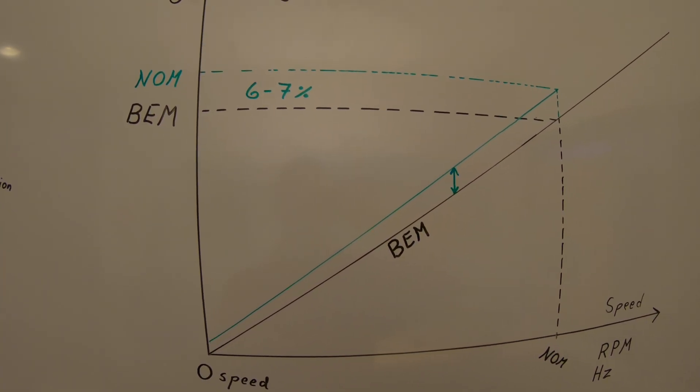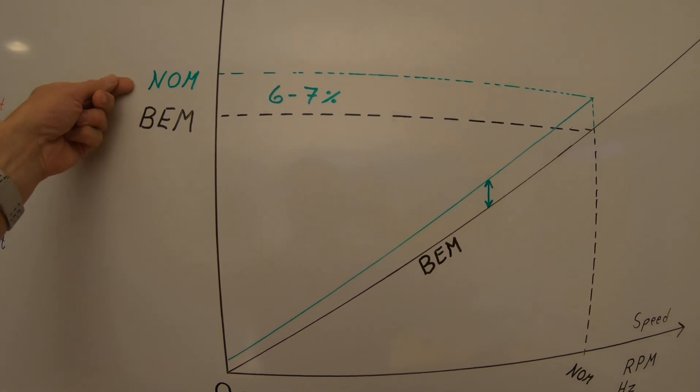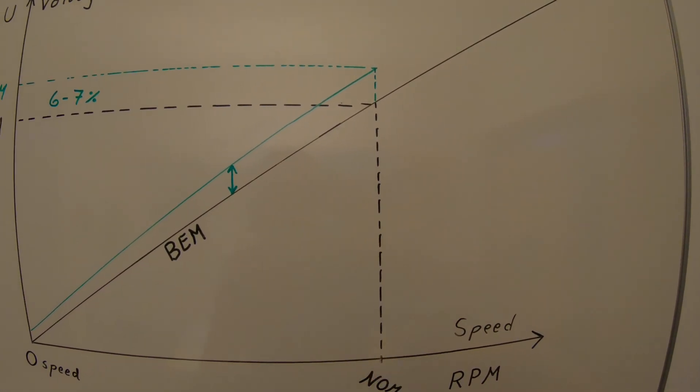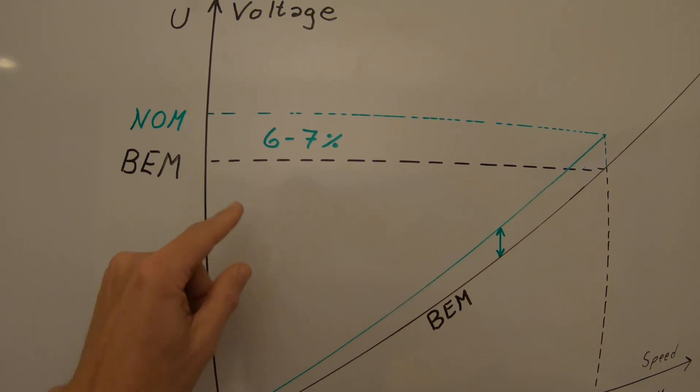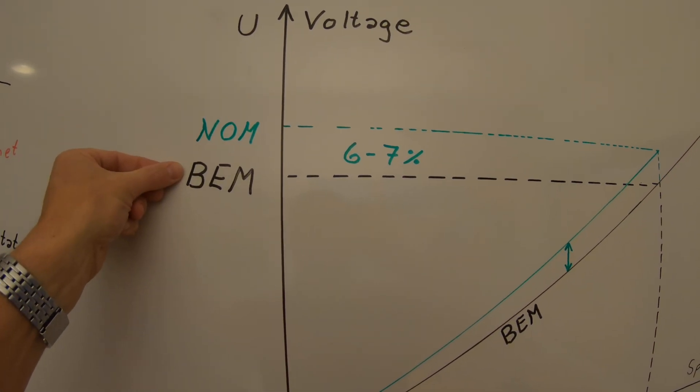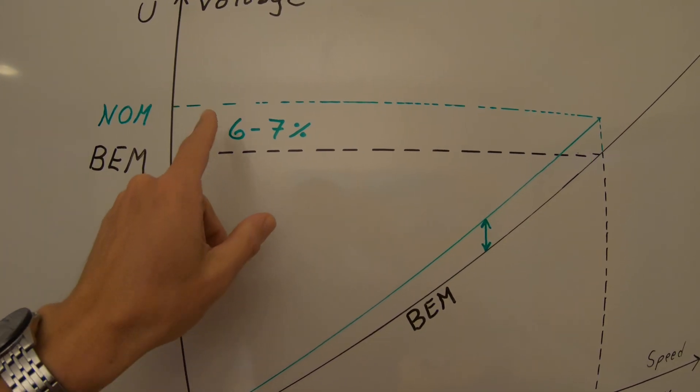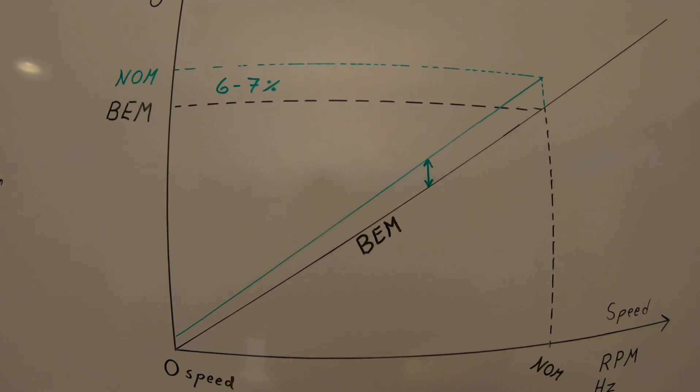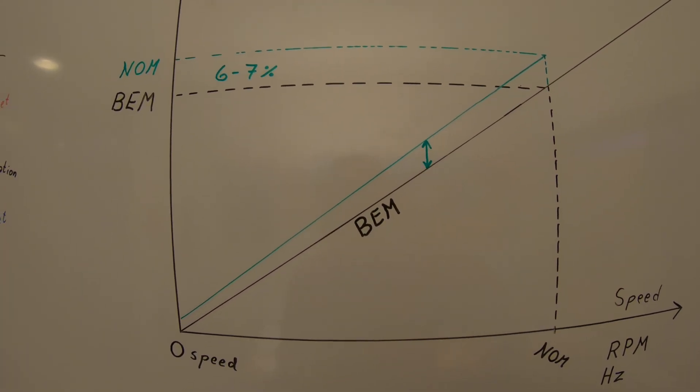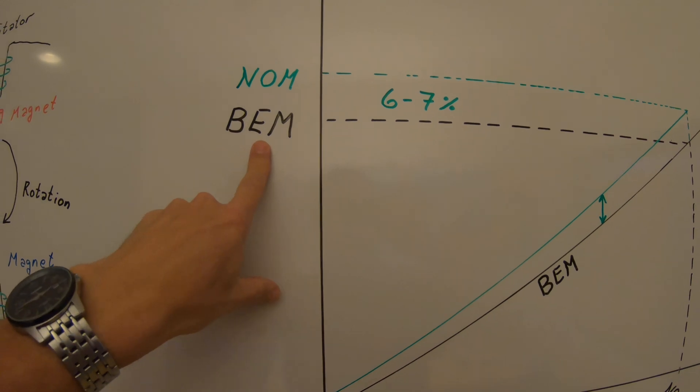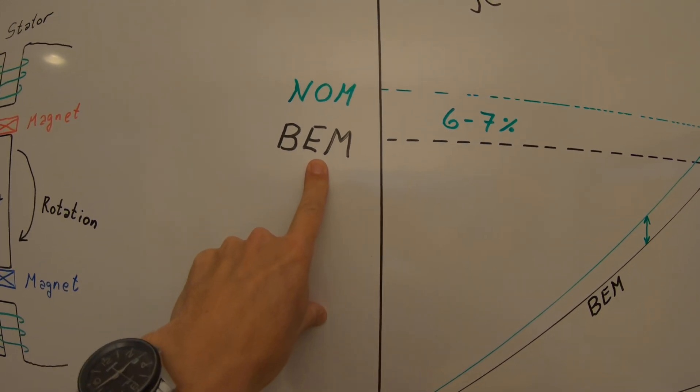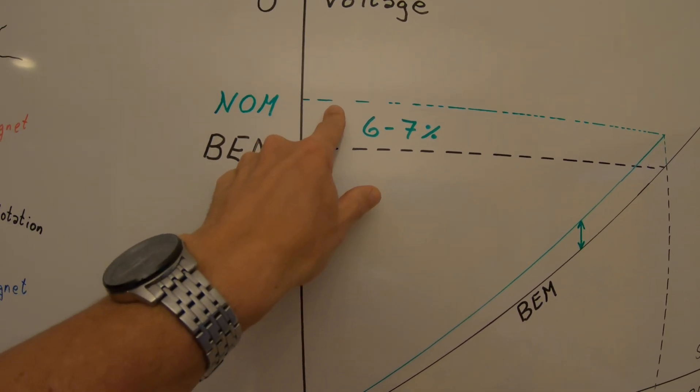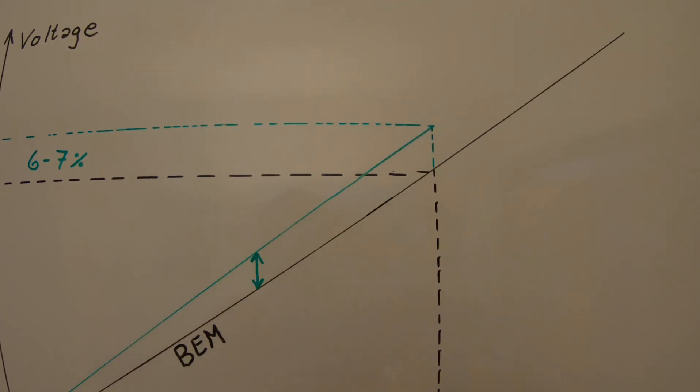So when you look at the data plate on the motor you will probably find these numbers. The difference between the motor nominal voltage and the back EMF voltage is usually in the range 6 to 7%. So if you have to estimate this in the field then 6-7% is a good estimate. Some motor vendors they just give the back EMF voltage on the datasheet and then it can be a little bit tricky to estimate what the motor nominal voltage would be.